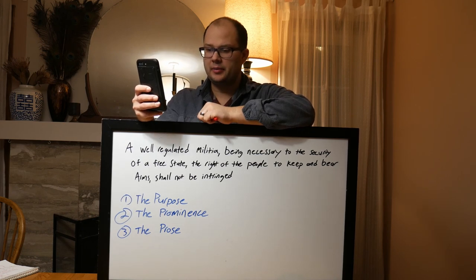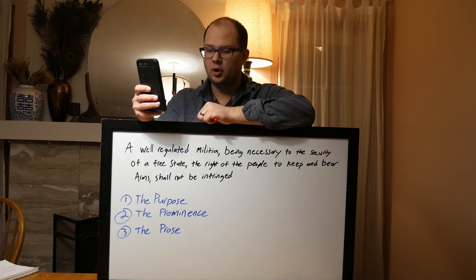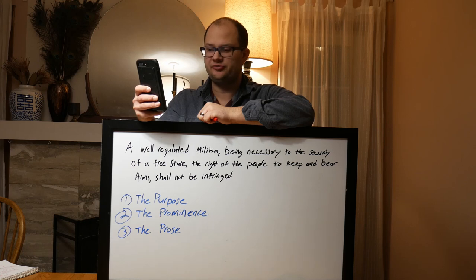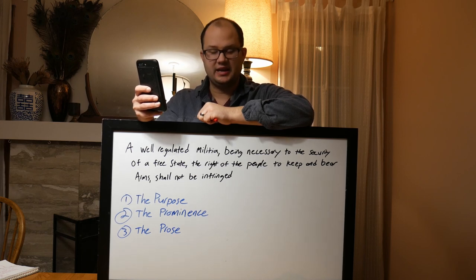The right of the people to keep and bear arms shall not be infringed. A well-regulated militia composed of the body of the people, trained to arms, is the best and most natural defense of a free country. James Madison, First Annals of Congress, 434, January 8th, 1789.